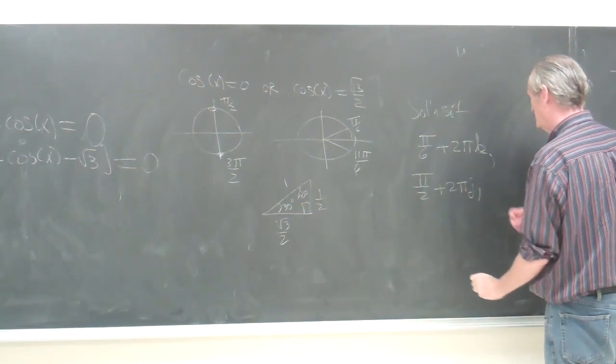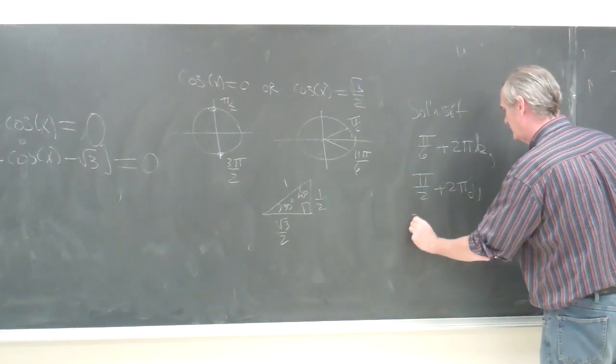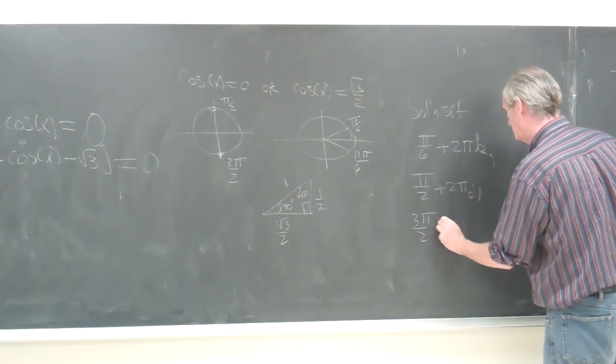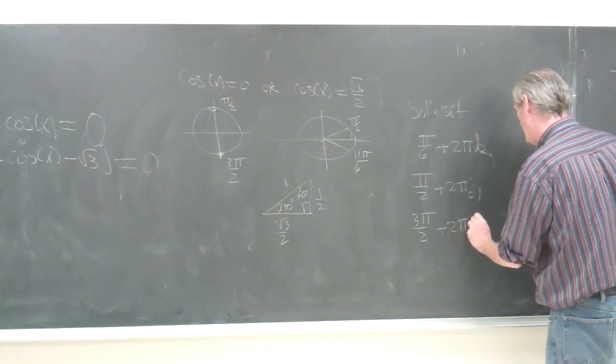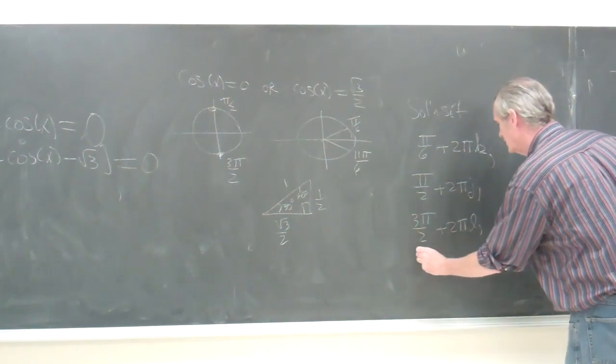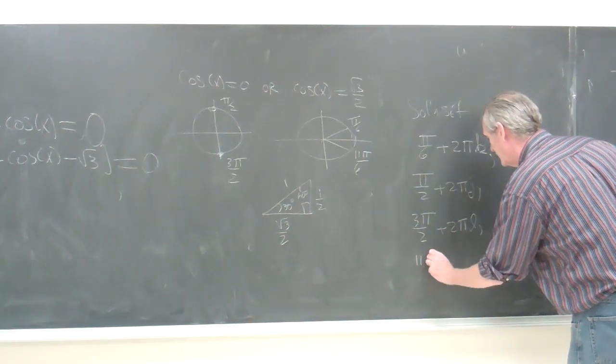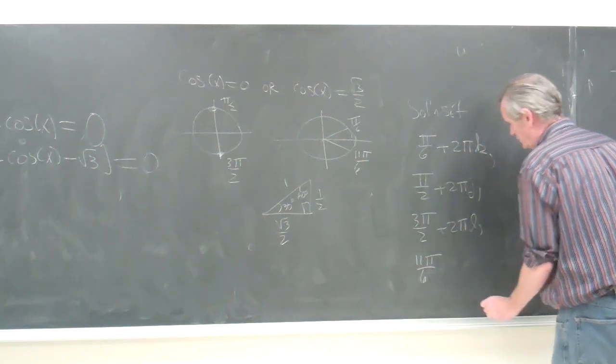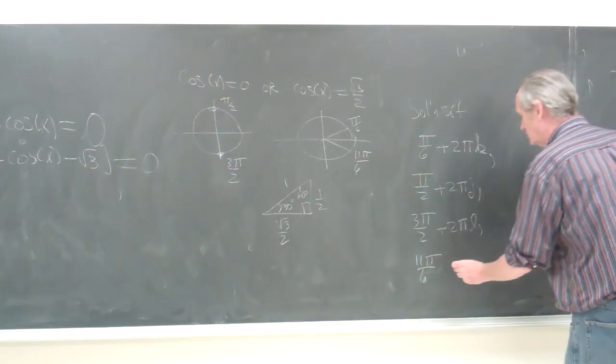Did I say π is an integer? Where k is an integer. Then we have 3π/2 plus 2lπ where l is an integer, and then 11π/6, which was 2π minus π/6.